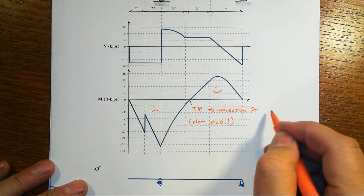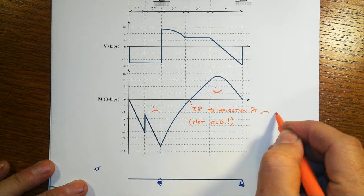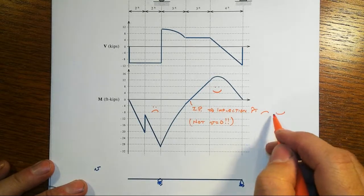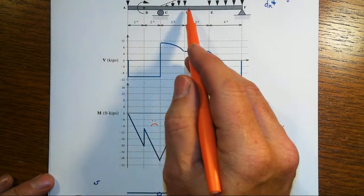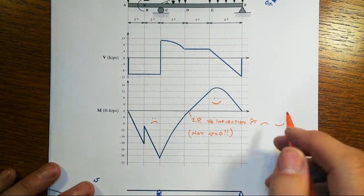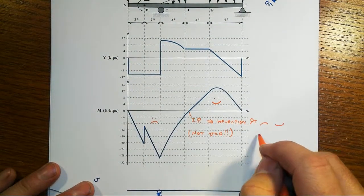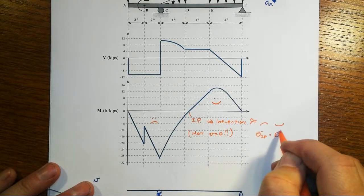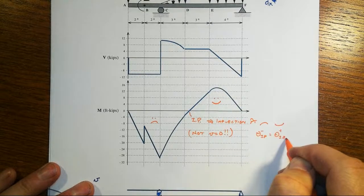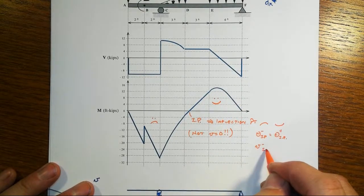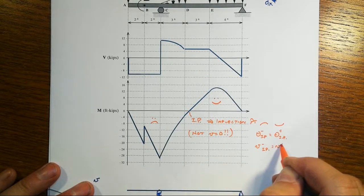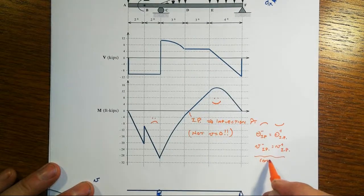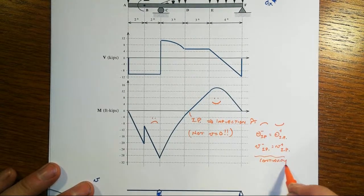That means it's the transition, in this case, from concave down to concave up. Now, at that location here, at this inflection point, this is a continuous smooth beam, so the deflected shape must meet here continuity, and that means that theta to the left of the inflection point, that's the slope, has to equal theta to the right of the inflection point, as well as the transverse displacement, which is not zero, has to be equal on either side to each other.